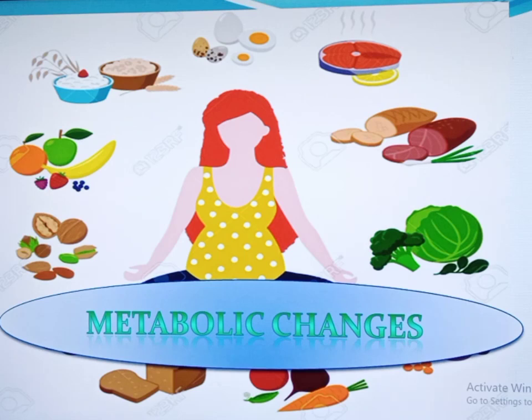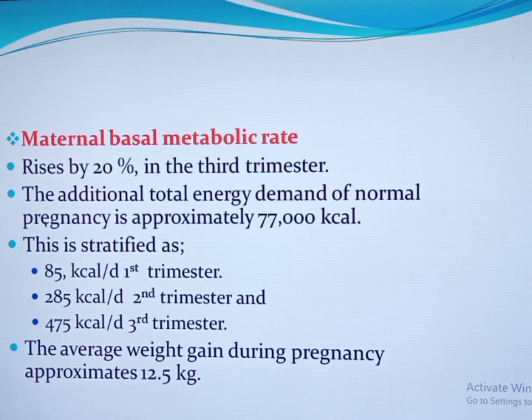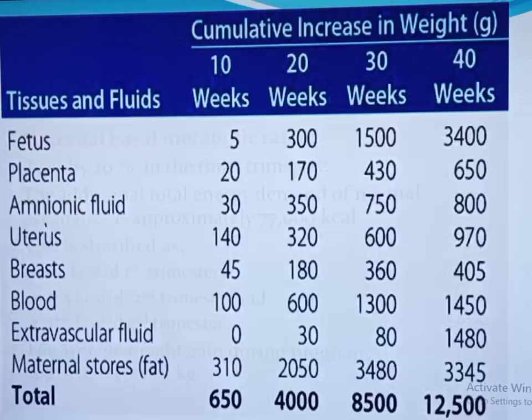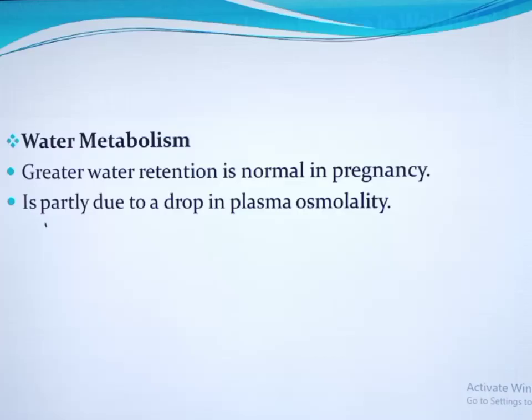Now the metabolic changes during pregnancy. The maternal basal metabolic rate rises by 20 percent in the third trimester. Additional total energy demands of normal pregnancy are approximately 77,000 kilocalories, which is maximum in the third trimester — around 475 kilocalories per day — in order to meet the fastest growth of the baby. The average weight gain during pregnancy is 12.5 kg, with the most important components being the fetus at 3.4 kg and maternal fat stores at 3.3 kg.